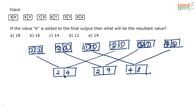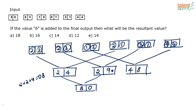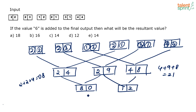For step 2, add all the first digits: 2 plus 2 plus 4 equals 8, written as 08, reversed gives 80. Add all the second digits: 4 plus 9 plus 8 equals 21, reversed gives 12. For step 3, add the first digit of the first value with the first digit of the second value: 8 plus 1 equals 9. Then add the second digit of the first value with the first digit of the second value: 0 plus 1 equals 1. So now the final step will be 9 minus 1, which equals 8.